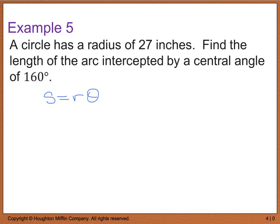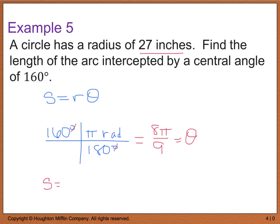As I mentioned on the previous slide, the key piece here is that theta is measured in radians. So the first thing we have to do is we have to take our 160 degrees and convert it to radians. And we're going to do that by taking pi radians and dividing that by 180 degrees. Our degrees are going to cancel, and that's going to leave us with 8 pi divided by 9 radians. So now this equals theta, and I have an r value of 27 inches.